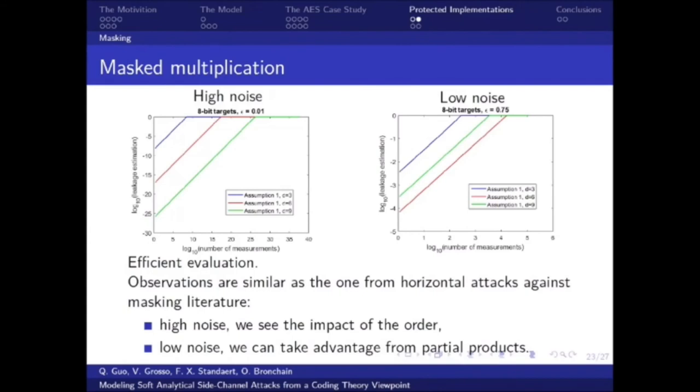Finally, one remark we can do is that using our set of equations, it's quite easy, or quite efficient, to derive this graph. But when you have to implement the horizontal attack and to prepare the attack to estimate the success rate, then it can be quite computationally intensive. So that is one main advantage, we have a similar observation, but then we are way more efficient.